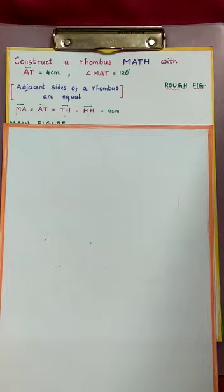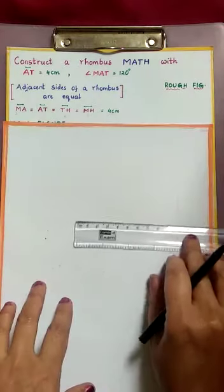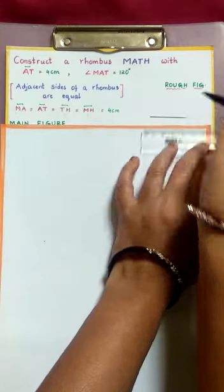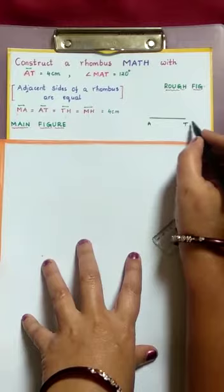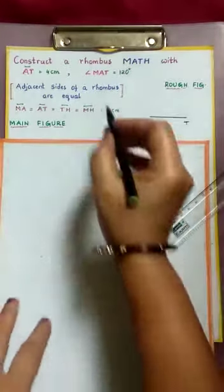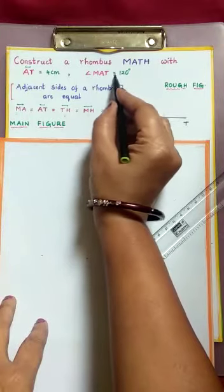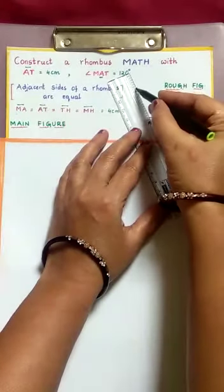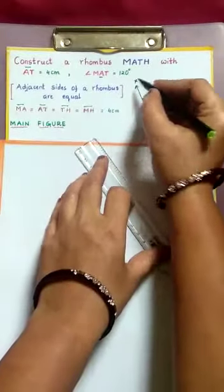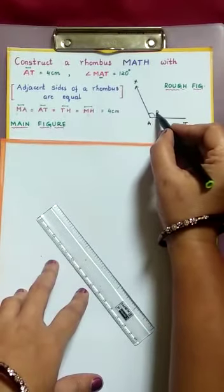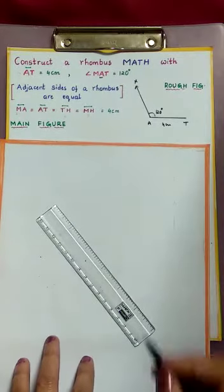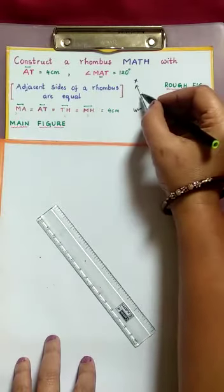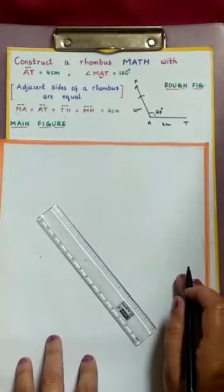First, construct the rough figure. Take AT as base, which is 4 cm. Angle MAT is 120 degrees, so at A we have to construct 120 degrees. Draw AX ray such that angle XAT is 120 degrees. Next, we have to construct MA of 4 cm. With A as center, 4 cm radius, draw an arc which intersects AX ray at M.